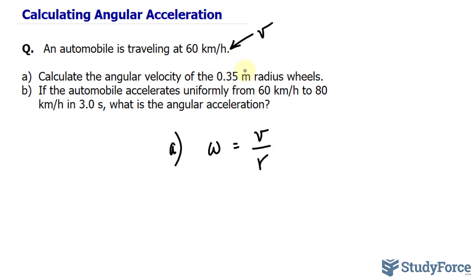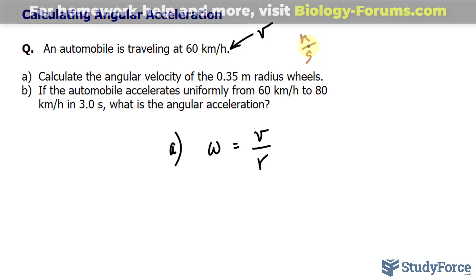Now notice that there is a mismatch in the units. This one's in meters. That's in kilometers per hour. What we need to do is make sure that the velocity is in meters per second, so make sure that your units always are in meters per second when you're doing this calculation.